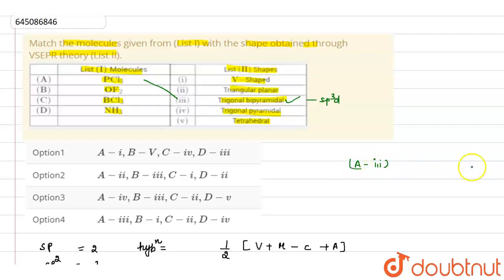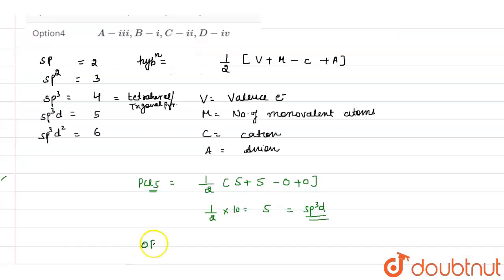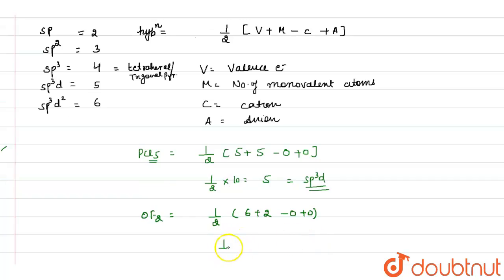Next, moving on to OF2 molecule. In case of OF2 molecule, oxygen has how many valence electrons? 6 valence electrons plus there are 2 monovalent atoms. There is no cation and no anion. So it will be half multiplied by 8, that means 4.